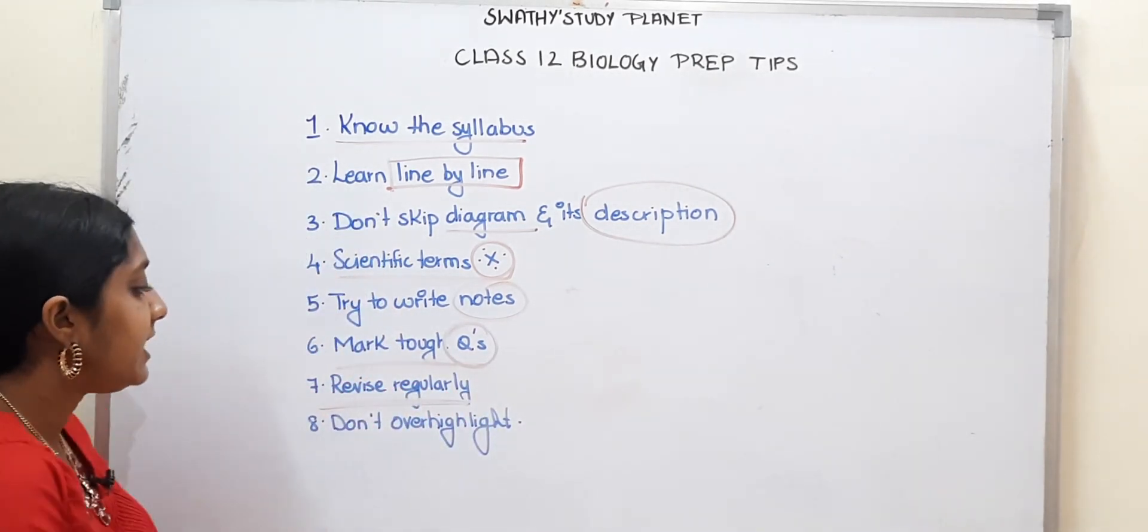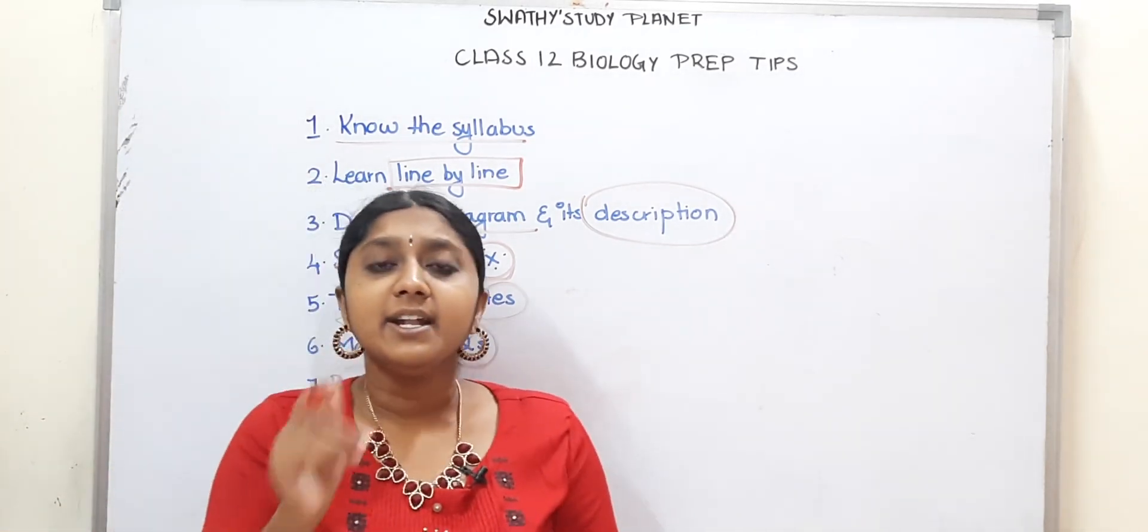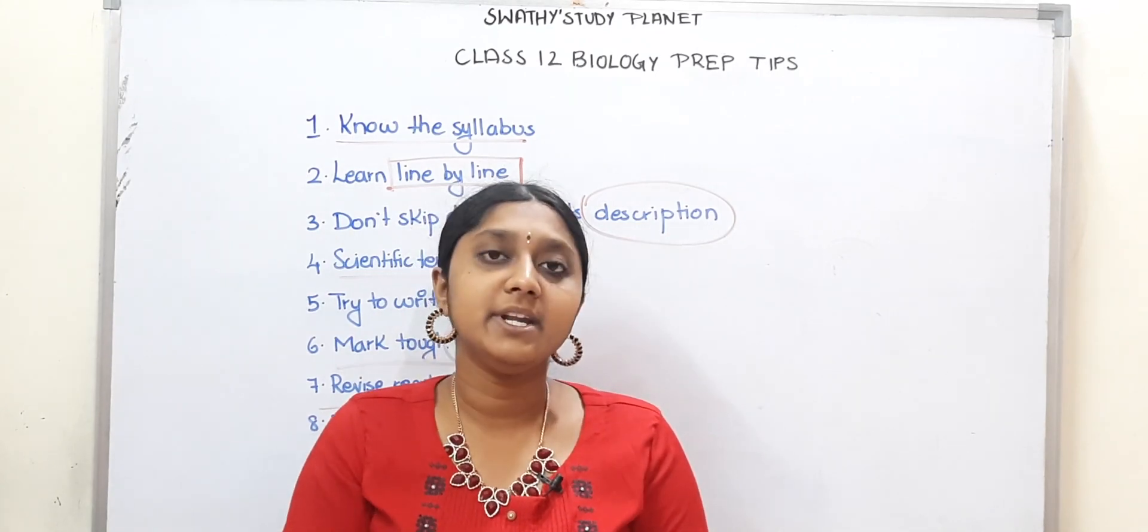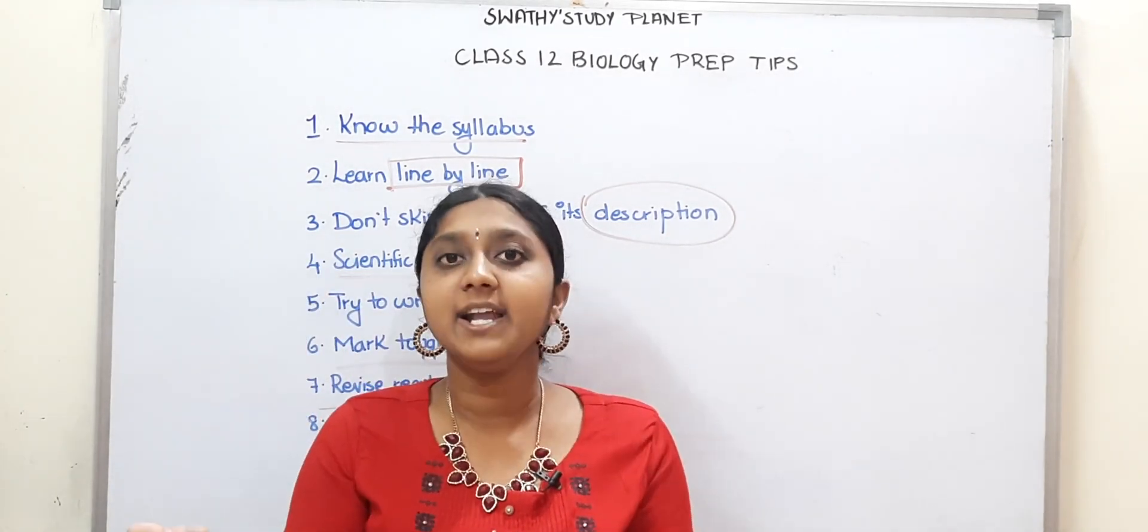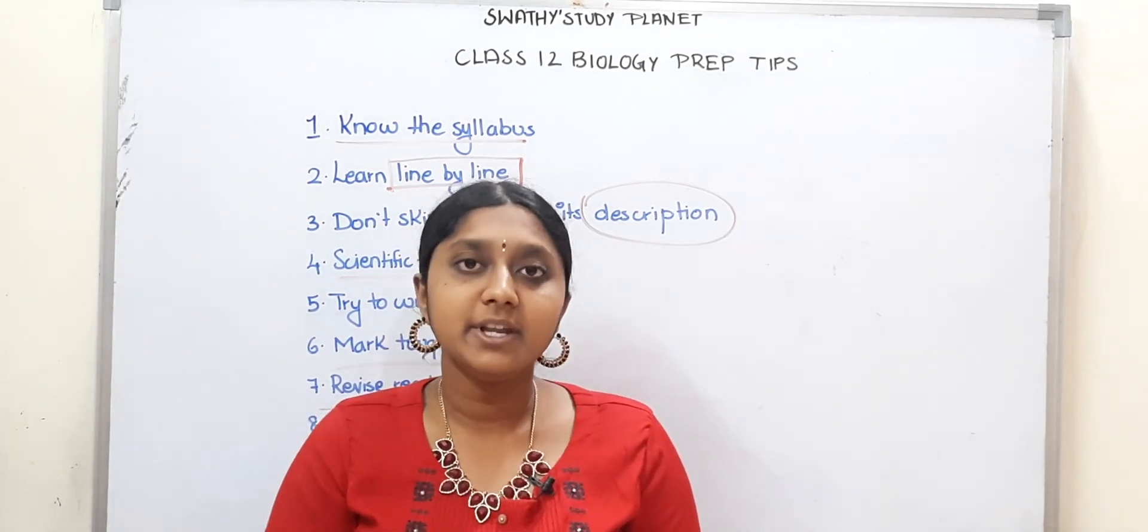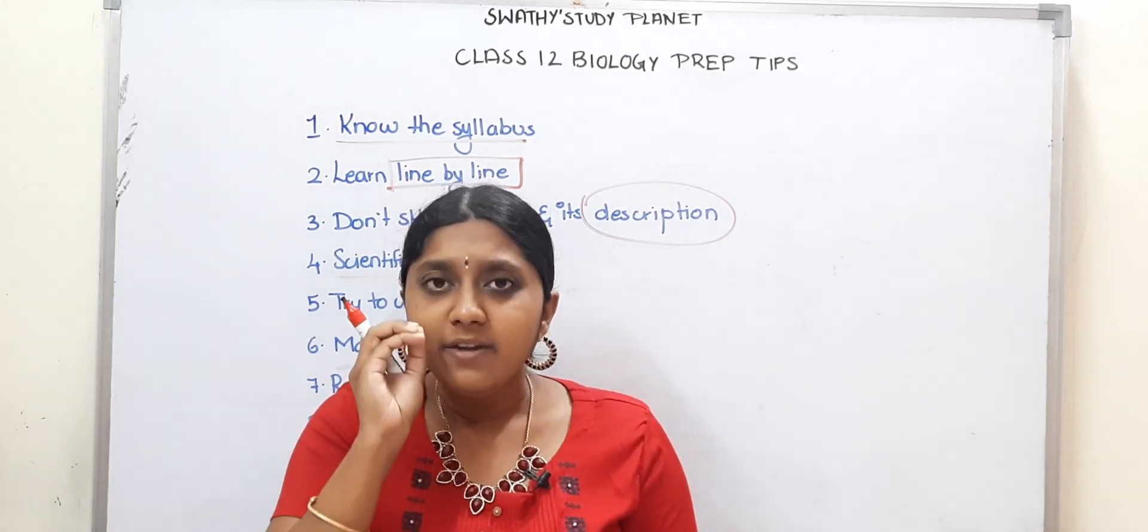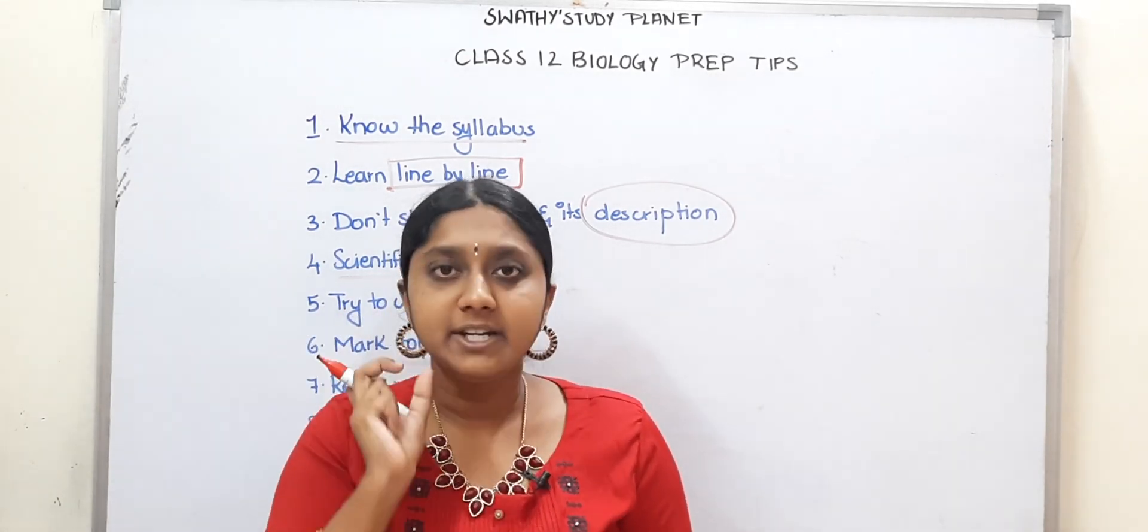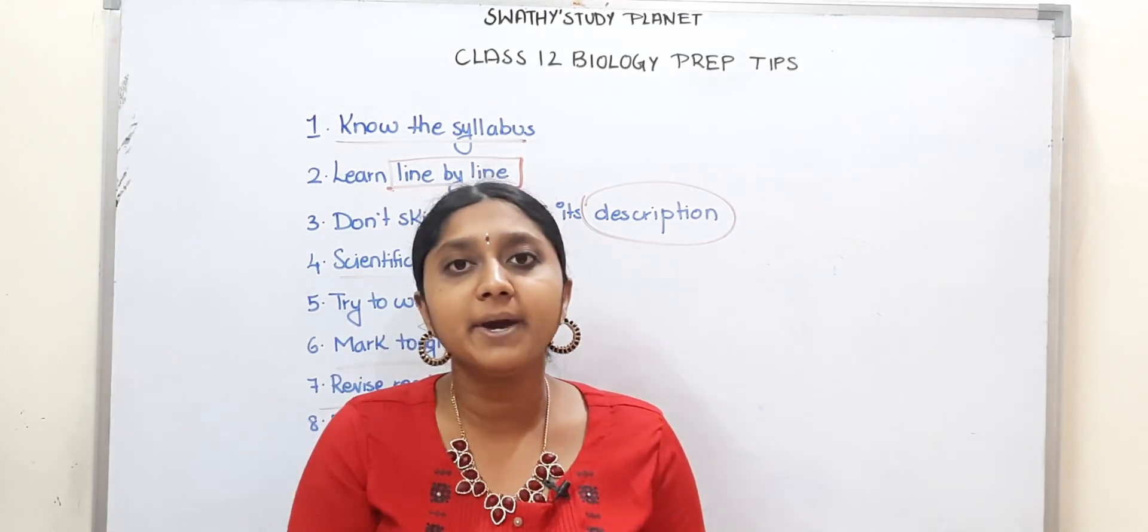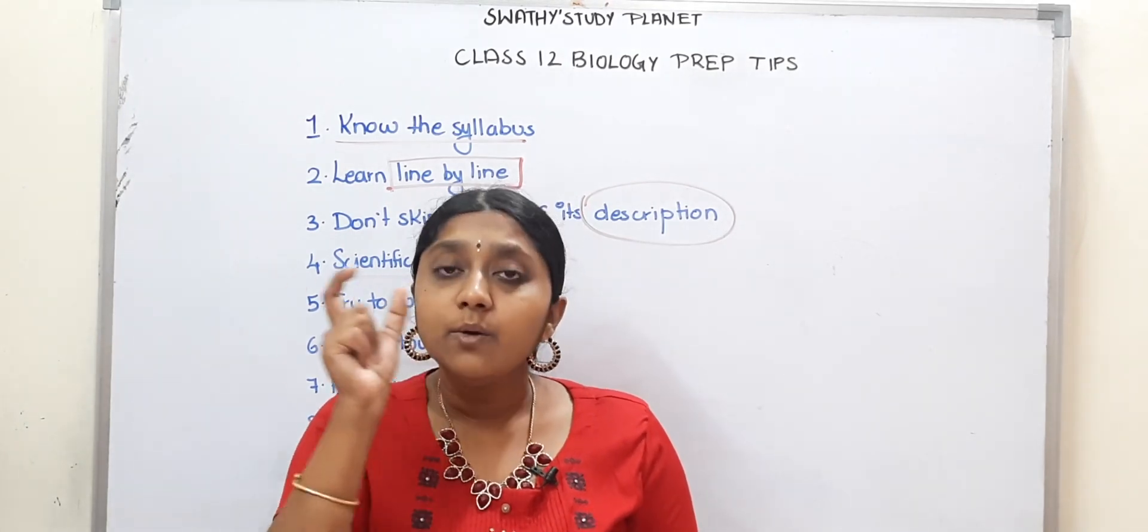And last but not least, don't over-highlight. In biology, everyone has made this mistake. You think everything is important, so you highlight everything. Your book can be fully highlighted. So you should only highlight the most important things. If you're studying biology, it's important to know the whole concept and paragraph, but you can't highlight everything. You can highlight the keywords.